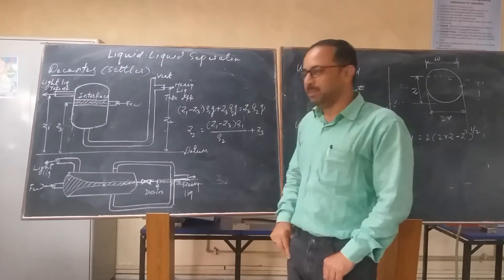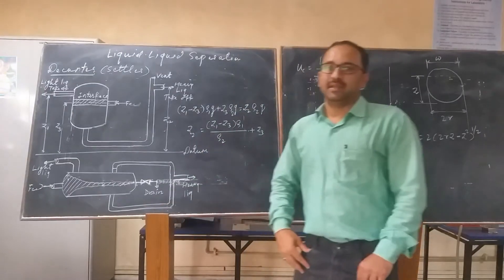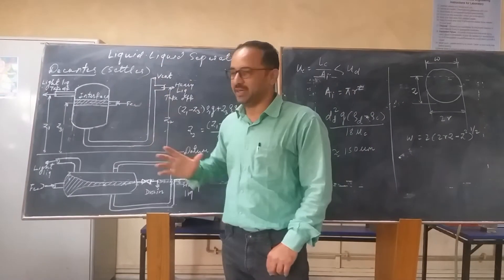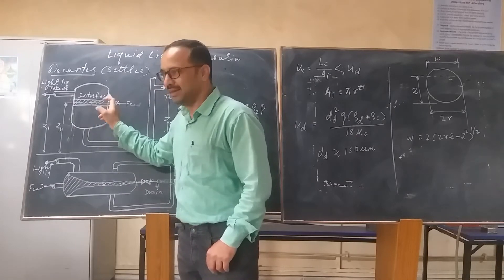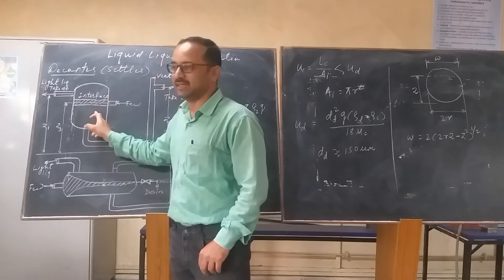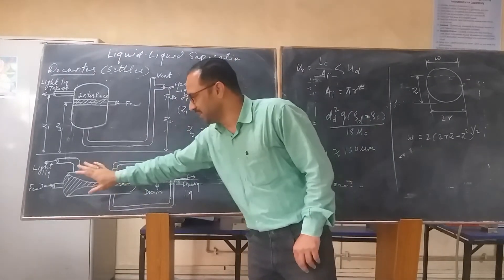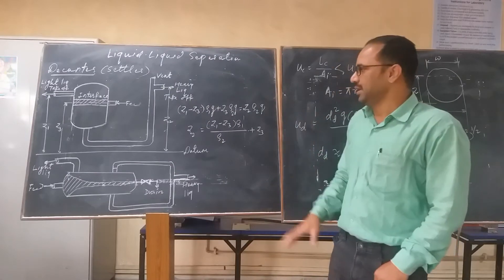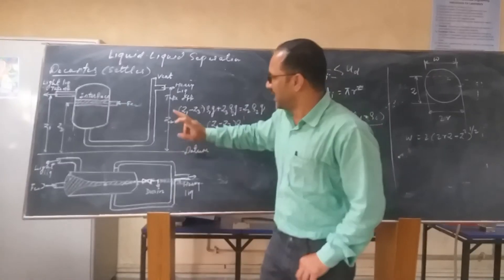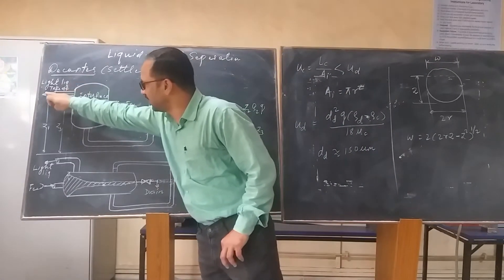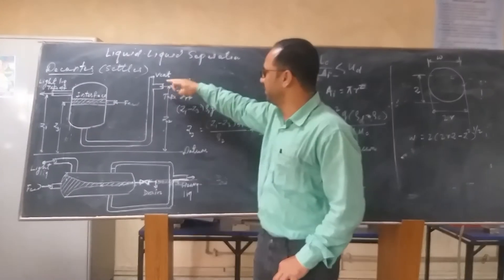The decanter may be placed as a vertical decanter or a horizontal decanter. If the flow rate of the feed given to the decanter is low, a vertical decanter is sufficient; if the flow rate is high, a horizontal decanter is used. The feed liquid is given across the interface, the light liquid is taken off from one side, and the heavy liquid is taken off via a siphon on the other side.